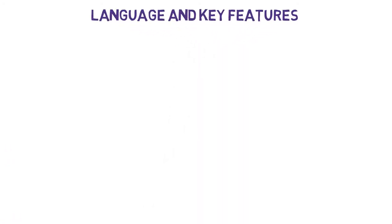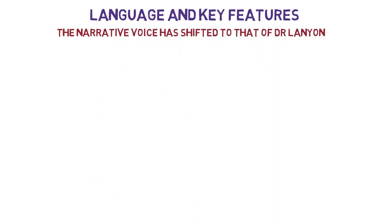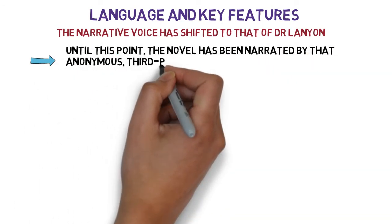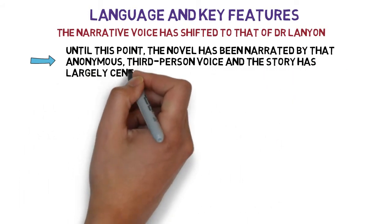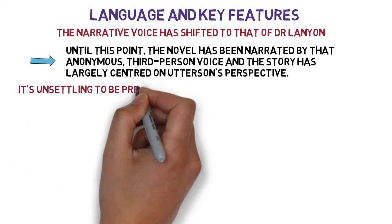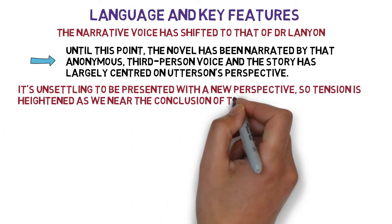At the start of this chapter, the narrative voice has shifted to that of Dr Lanyon. This in itself is interesting, because until this point the novel has been narrated by that anonymous third-person voice, and the story has largely centred on Utterson's perspective. In chapter 9, that has shifted to the singular perspective of Dr Lanyon, which is a little jarring for the reader. It's unsettling after eight chapters to be presented with a new perspective, so the tension is heightened as we near the conclusion of the novel.